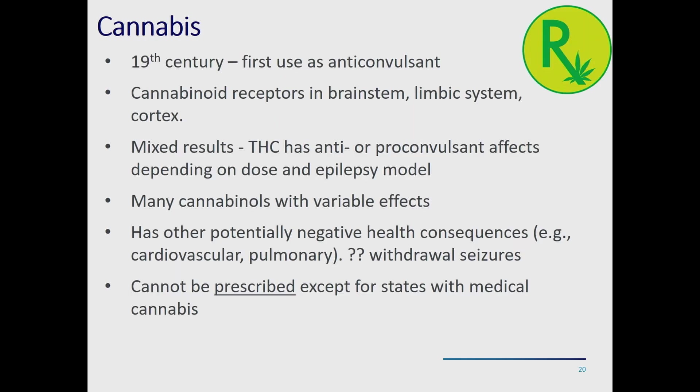Cannabis was recognized as an anticonvulsant in the 19th century. Cannabinoid receptors are found throughout the brain. The take-home message is that there are mixed results: THC has either anti- or pro-convulsant effects depending on the dose and the seizure model tested.